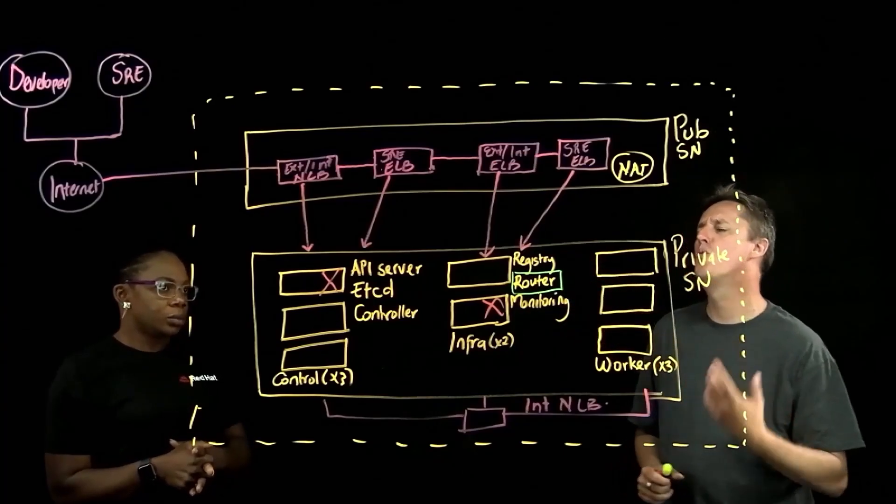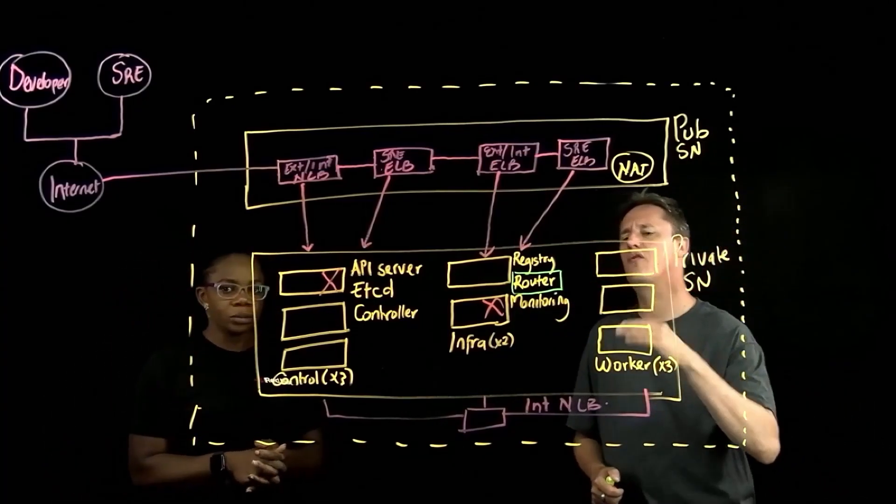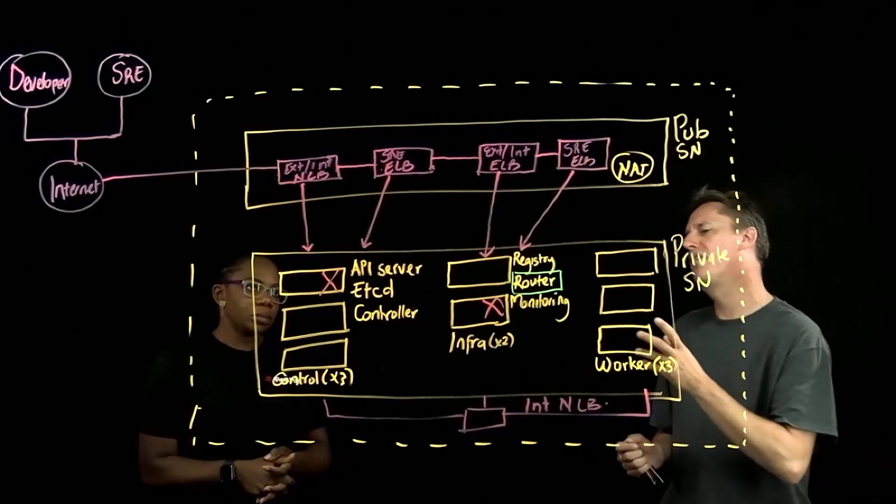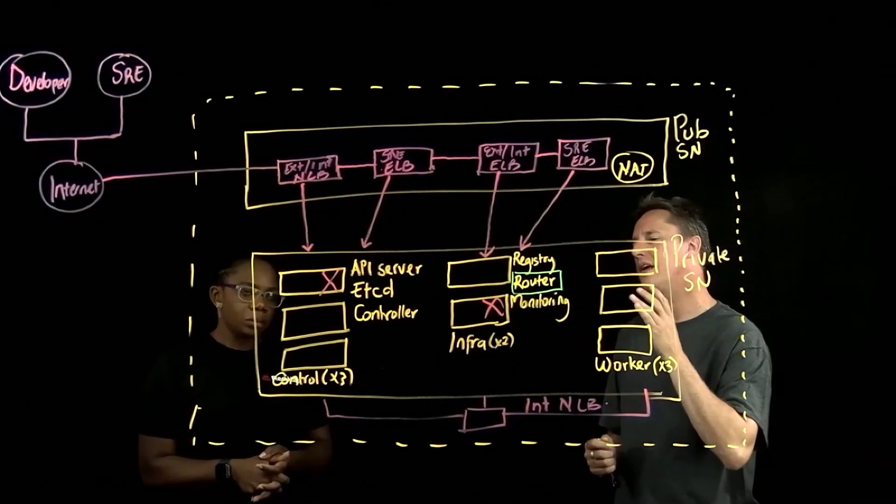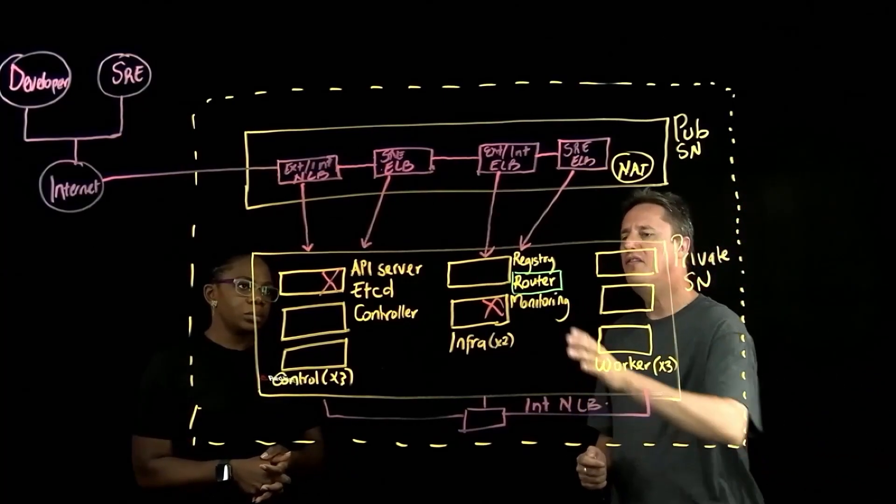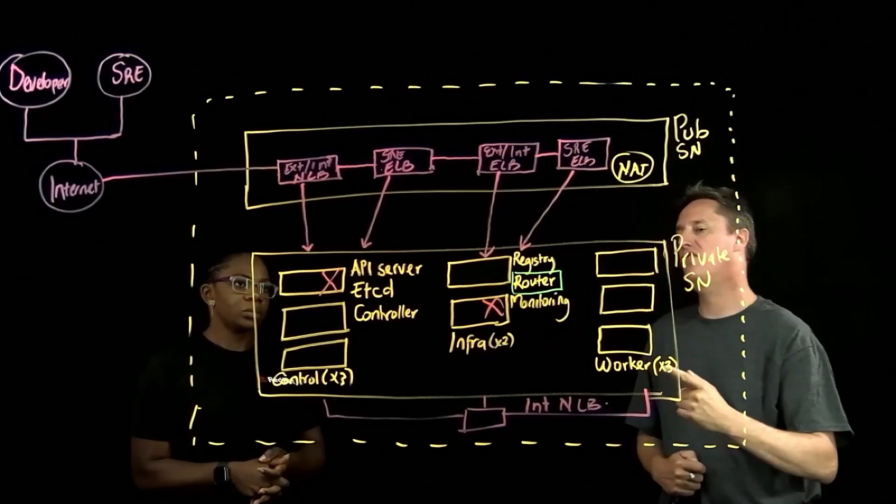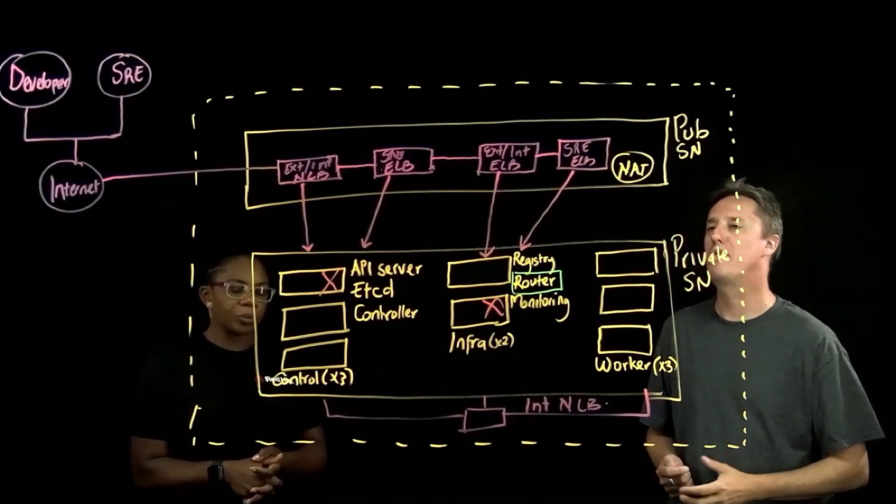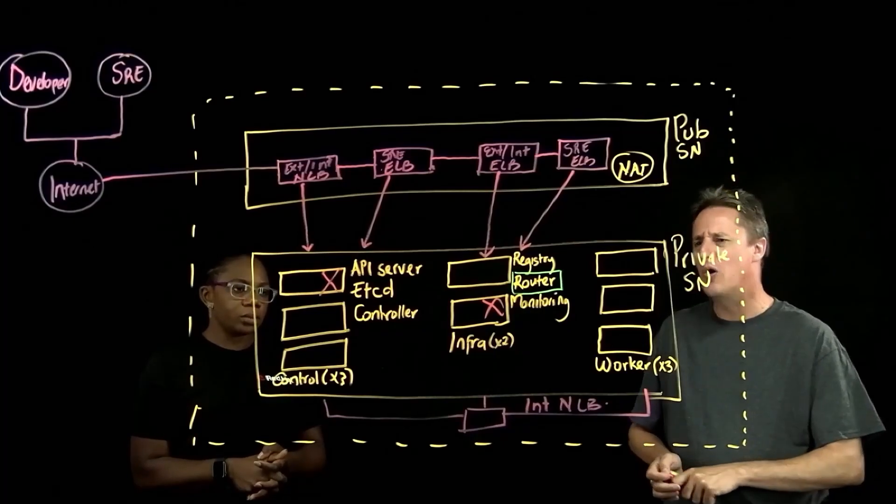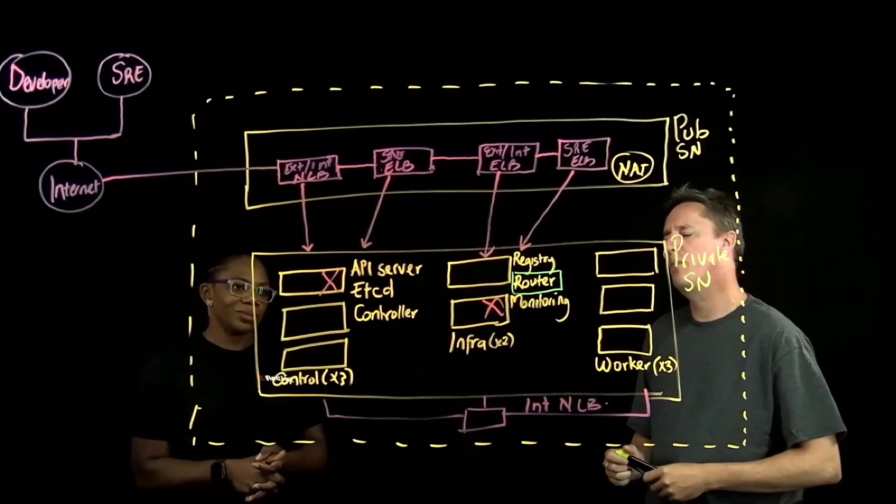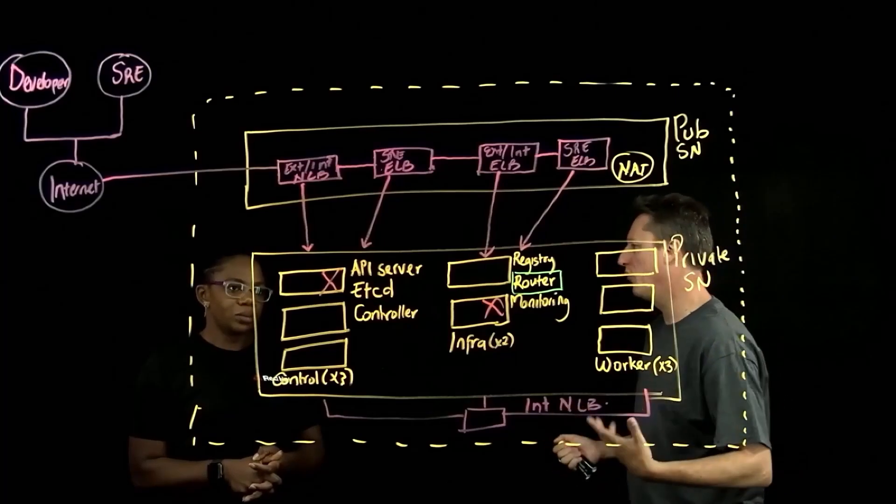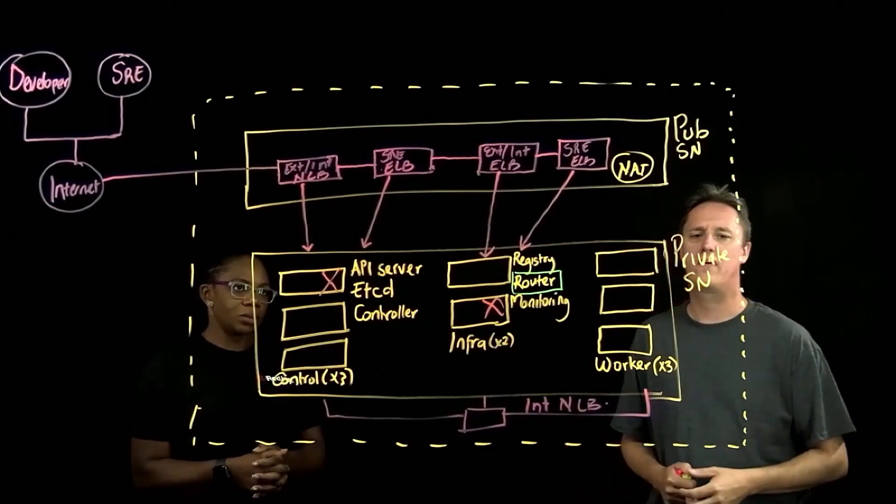And configuration-wise, the registry, the router, and the monitoring layers, they're actually a lot simpler than the etcd or the actual controllers, so these are even easier and faster to replace should something fail. I would argue that infrastructure teams could probably replace these within a few minutes with the automation that they have at their hands.